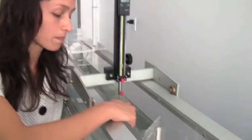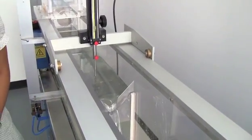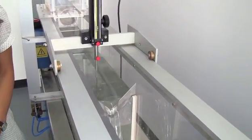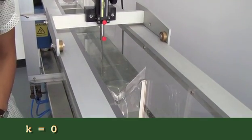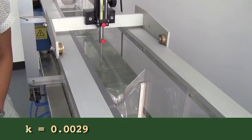The head correction K is also a function of the angle theta of the weir. In this case, for theta equals 90 degrees, the head correction K is 0.0029.